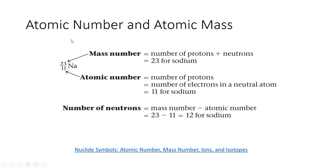How do you determine how many protons, neutrons, and electrons are in an atom? The top number in the notation is the mass number, which is the number of protons plus the number of neutrons. The bottom number is the atomic number, which is the number of protons. To find the number of neutrons, take the mass number minus the atomic number — since mass number equals protons plus neutrons, subtracting the atomic number leaves you with the neutron count.